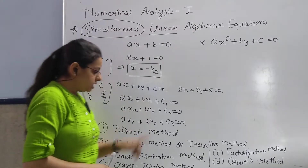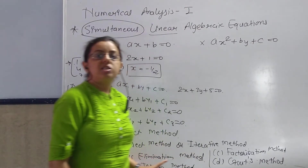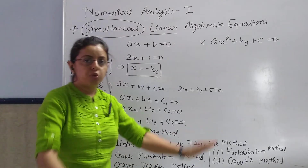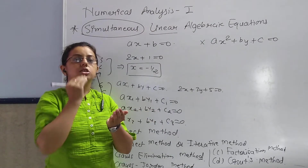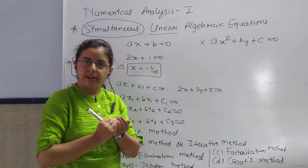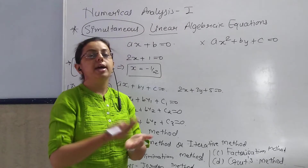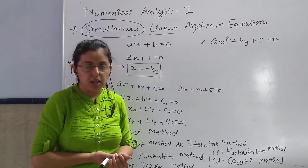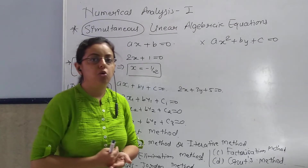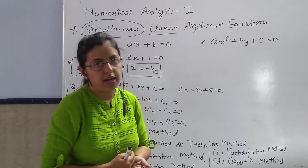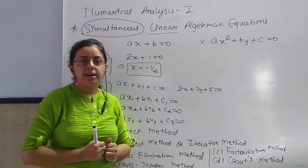Now, talking about Gauss elimination method — in this method, first of all you take the system, write it in matrix form, and then apply elementary transformations on this matrix. You have to convert it into an upper triangular matrix. What is an upper triangular matrix?